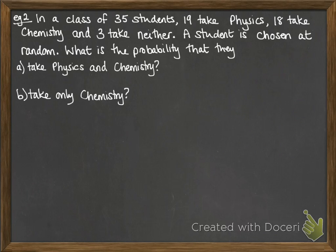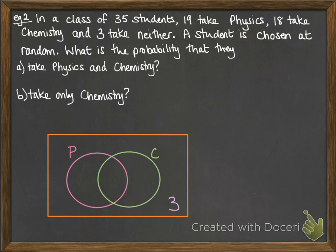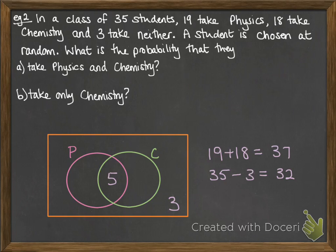Example 2: we've got a class of 35 students — 19 take physics, 18 take chemistry, and 3 don't take either. We're choosing a student at random and want to work out certain probabilities. The best diagram for this is a Venn diagram. If we add 19 and 18 we get 37, which is too much. So: 35 minus 3 (those who don't do either) gives 32, meaning the overlap is 5 because 37 is 5 more than 32. Once we have that 5 in the overlap, we can work out the other values. Physics and chemistry overlap is 5 out of 35, which cancels to 1/7. Only chemistry (without physics) is 13 out of 35.